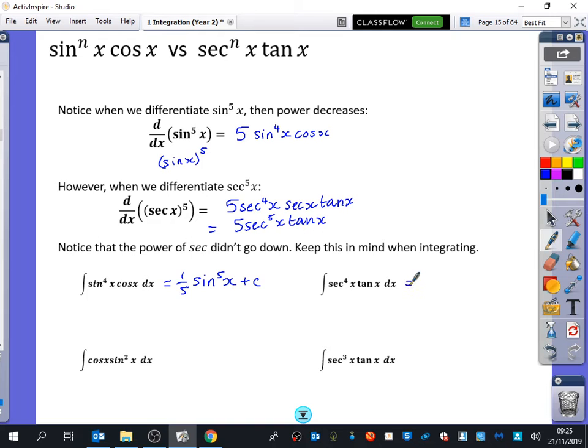If we're going to integrate sec to the power of 4x tan x, first of all, we can do the reverse chain rule, because we've got this sec x tan x kind of the bit that was there from the differentiation. But we've just said here that the power needs to stay the same. So this one is going to integrate to sec to the power of 4x with 1 over 4 to change the scaling plus c. OK?